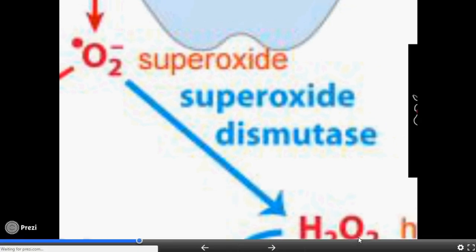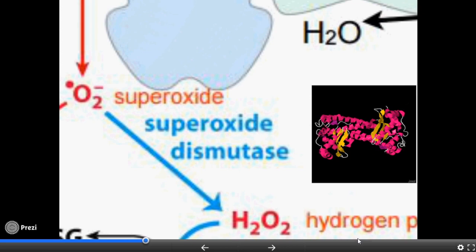As was discussed before, without this dismutase, superoxide radicals would build up in the mitochondria and shut down the powerhouse of our cells.